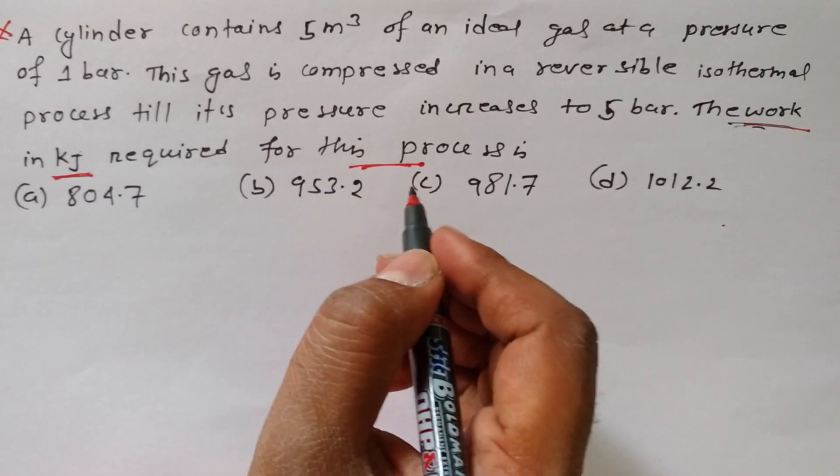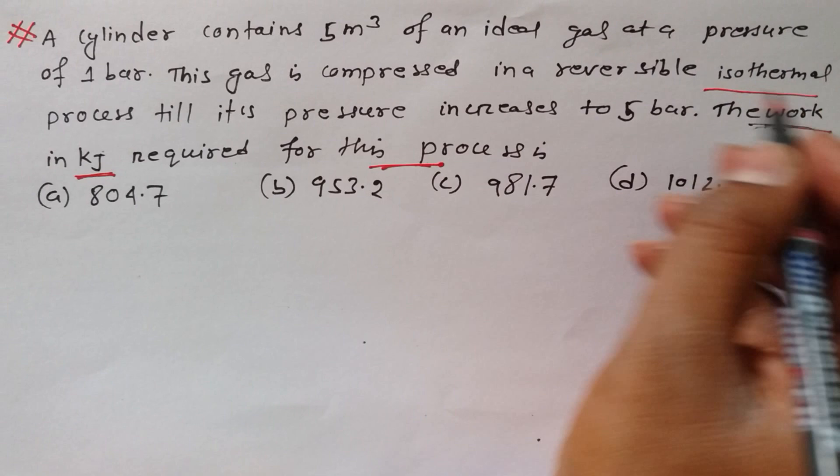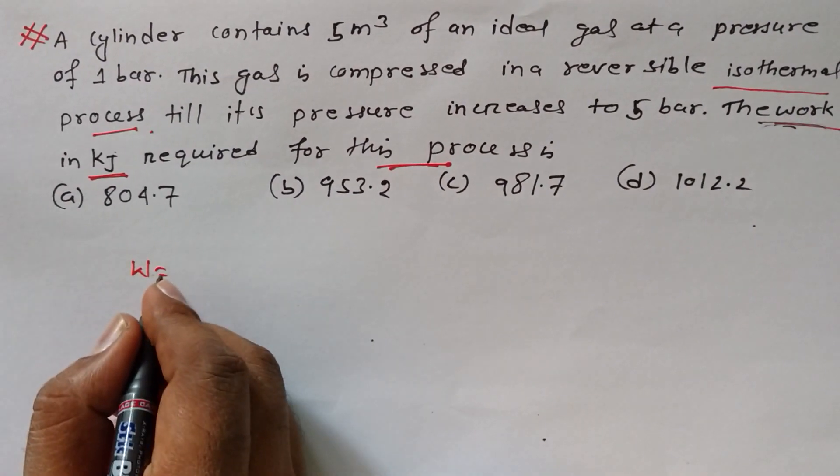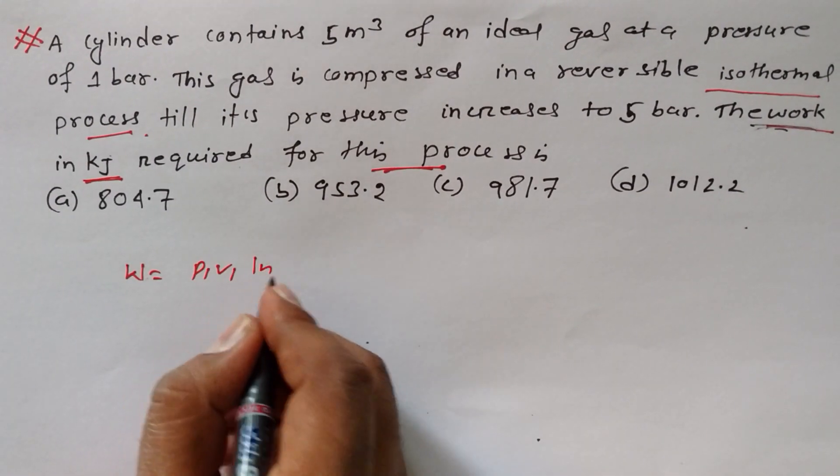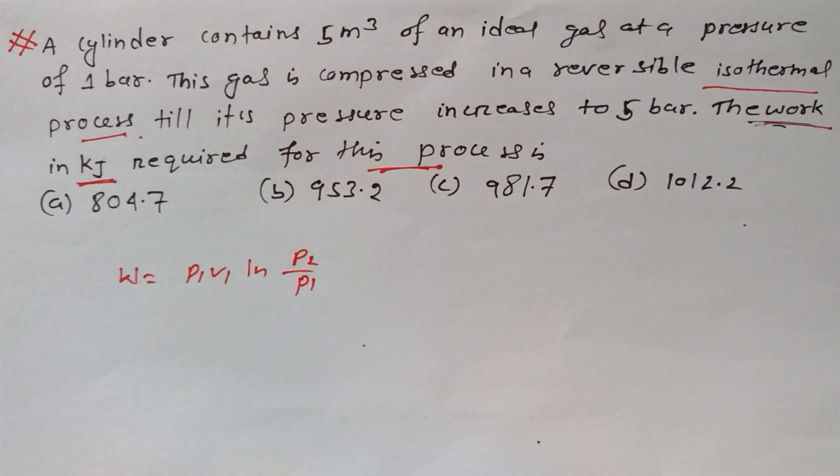They're talking about the compressed reversible isothermal process. So we know the work done formula for isothermal process: P1 V1 natural log P2 by P1. We got this formula, we have to find out W, work done.